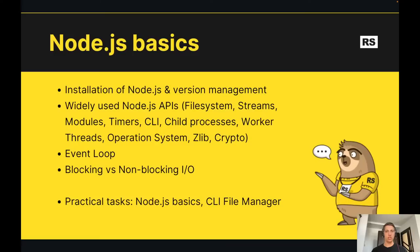In the scope of learning Node.js basics, we cover how to install Node.js and manage its versions, how to work with commonly used APIs such as file system, streams, module systems, timers, command line interface, scaling using child processes and worker threads, OS module, zlib, crypto, and more. We cover the most widely used modules. We also study how the event loop works in Node.js, what blocking versus non-blocking I/O means, and there are two practical tasks for this topic.